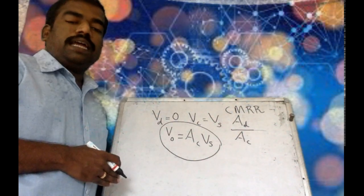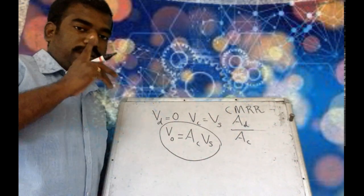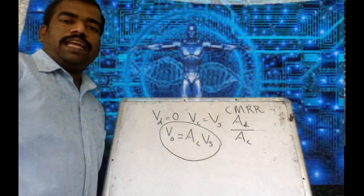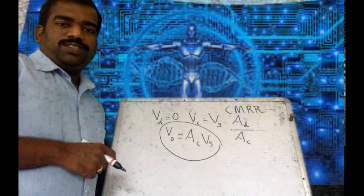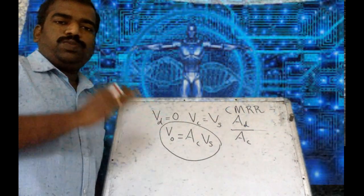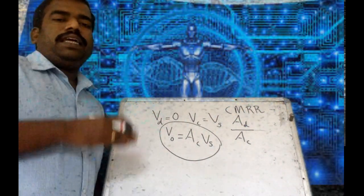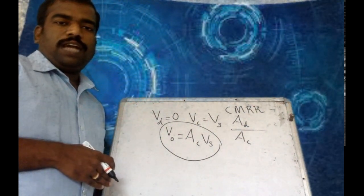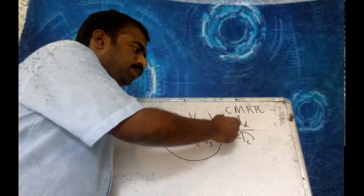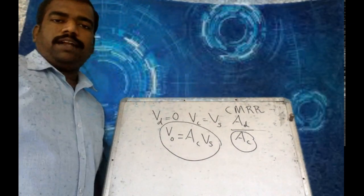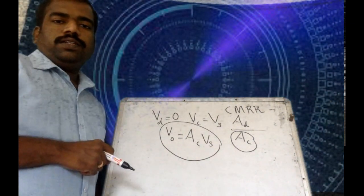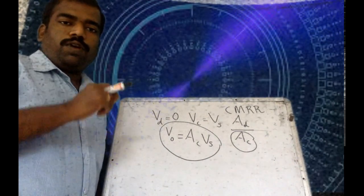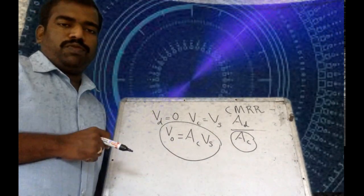Ideally, CMRR must be infinite, because ideally the common mode gain AC must be zero. In practical circuits, CMRR must have a large value, because you can expect some common mode gain as well. For a good practical operational amplifier, you can expect a large value for CMRR.